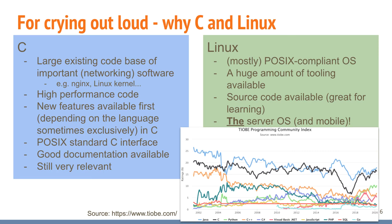At this point you might ask yourself, for crying out loud why C and why Linux? C seems like a language that is lacking a lot of modern language constructs — it might feel old, unsafe to use and error prone. But C has its uses and a lot of software, in particular software that is powering a large fraction of important network services, is written in C. Nginx for example, a modern and popular web server, is written in C, and the Linux kernel itself is also written mostly in C. One of the reasons C is still being chosen even for new projects is that it offers high performance, and products like web servers or other kinds of server software need to be performant in order for the services they offer to scale.